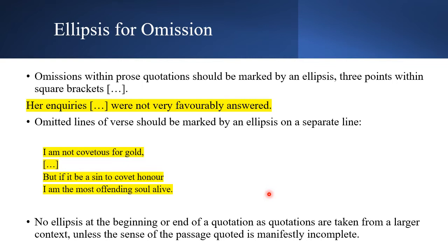Ellipses for omission: omissions within prose quotations should be marked by an ellipsis of three points within square brackets — [...]. For example, 'Her inquiries were not very favorably answered' — if a long sentence has words that are not relevant to your argument, you pick the relevant bits and use [...] to show the reader that some text has been omitted. Because your footnote provides the full source detail, the reader or examiner can easily go back and check.